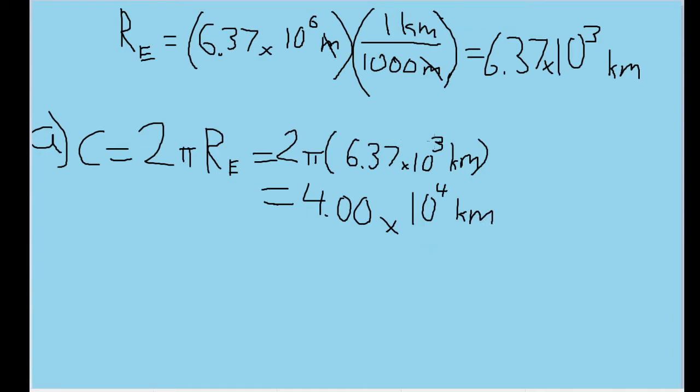So plugging in 6.37 times 10 to the third power kilometers for r sub E and plugging this into our calculator, and then rounding back to three significant figures so that our number of significant figures match up, we get a circumference of the Earth of 4.00 times 10 to the fourth power kilometers.